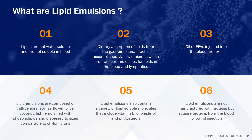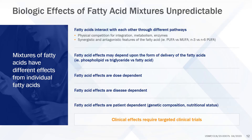What are lipid emulsions? Lipids are not soluble in water or the bloodstream. The body transports lipids in water-soluble forms as part of chylomicrons and lipoproteins. Lipid emulsions are composed of triglycerides from natural oils that are emulsified with phospholipids in water to form micelles that are size comparable to chylomicrons and soluble in the blood. It is important to note that the biologic effects of fatty acid mixtures as found in lipid emulsions are unpredictable. Mixtures of fatty acids have different effects from individual fatty acids. Fatty acids interact with each other through different pathways. There may be physical competition for integration, metabolism, and access to enzymes.